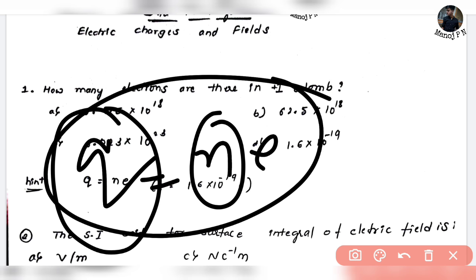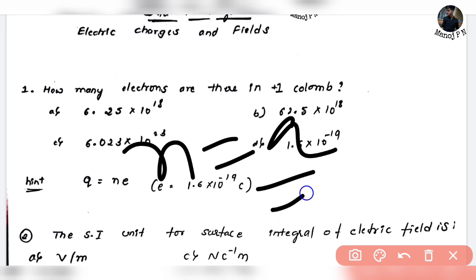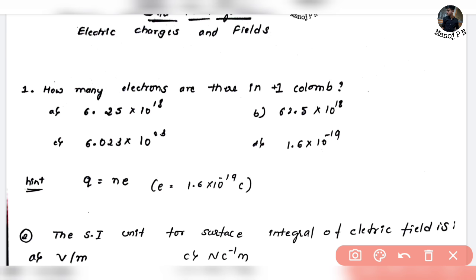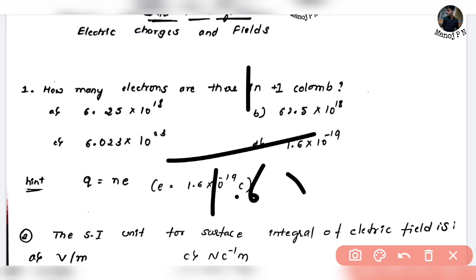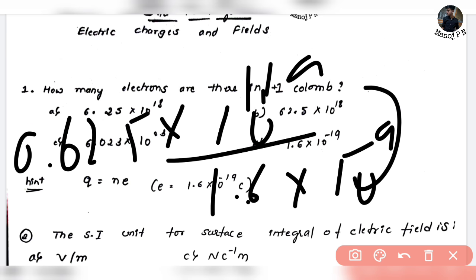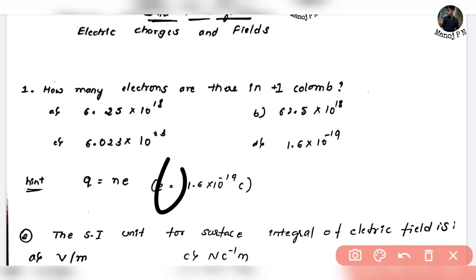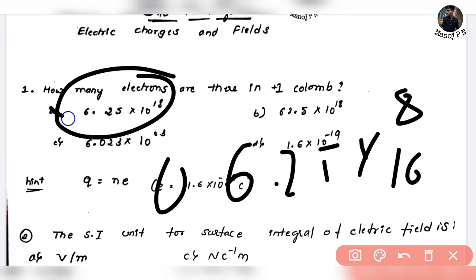Application-level thinking. You rearrange to find N. Q divided by e: 1 divided by 1.6 times 10 to the power of minus 19 gives 0.625 times 10 to the power of 19, which we switch to 6.25 times 10 to the power of 18. Option A is your answer.